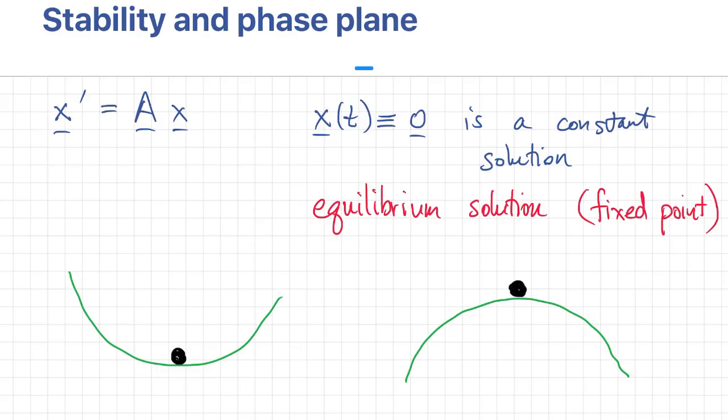If we then turn the bowl over and put a ball at the top, if we get it in just the right spot, it'll stay there. And that's an equilibrium solution too.